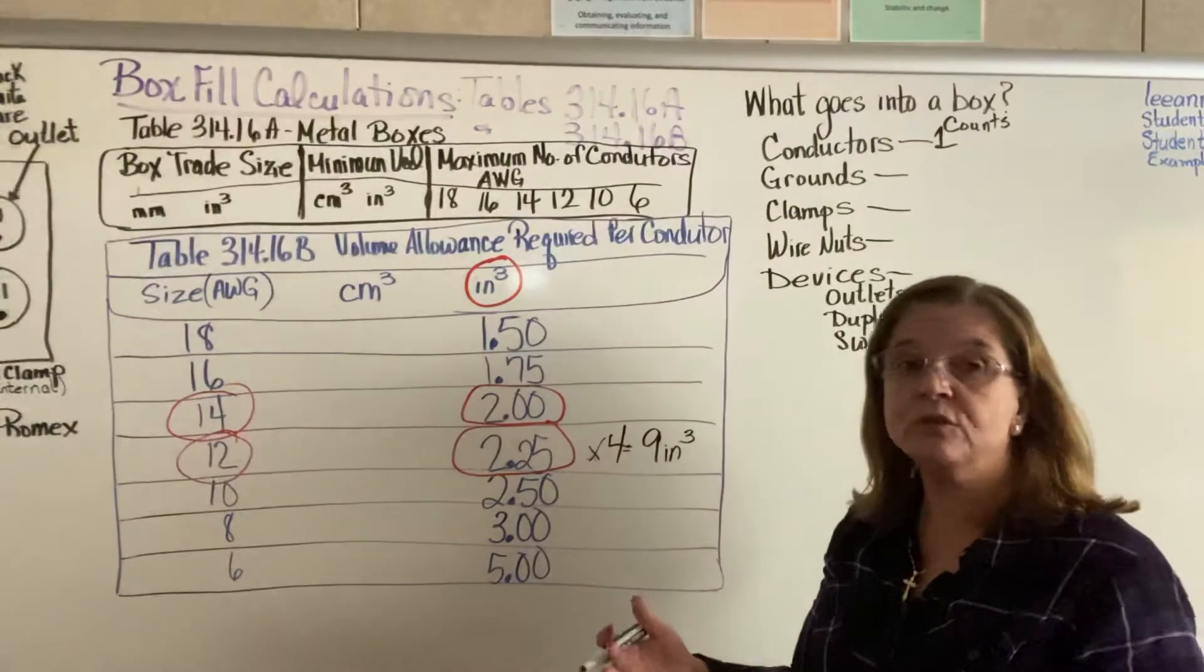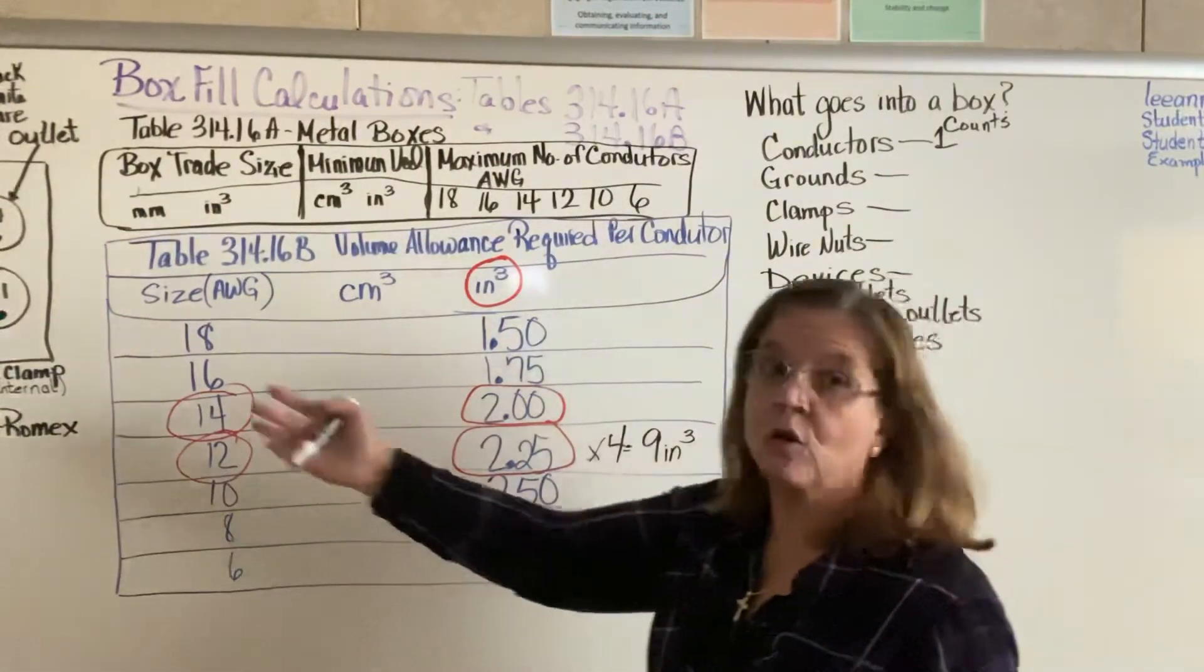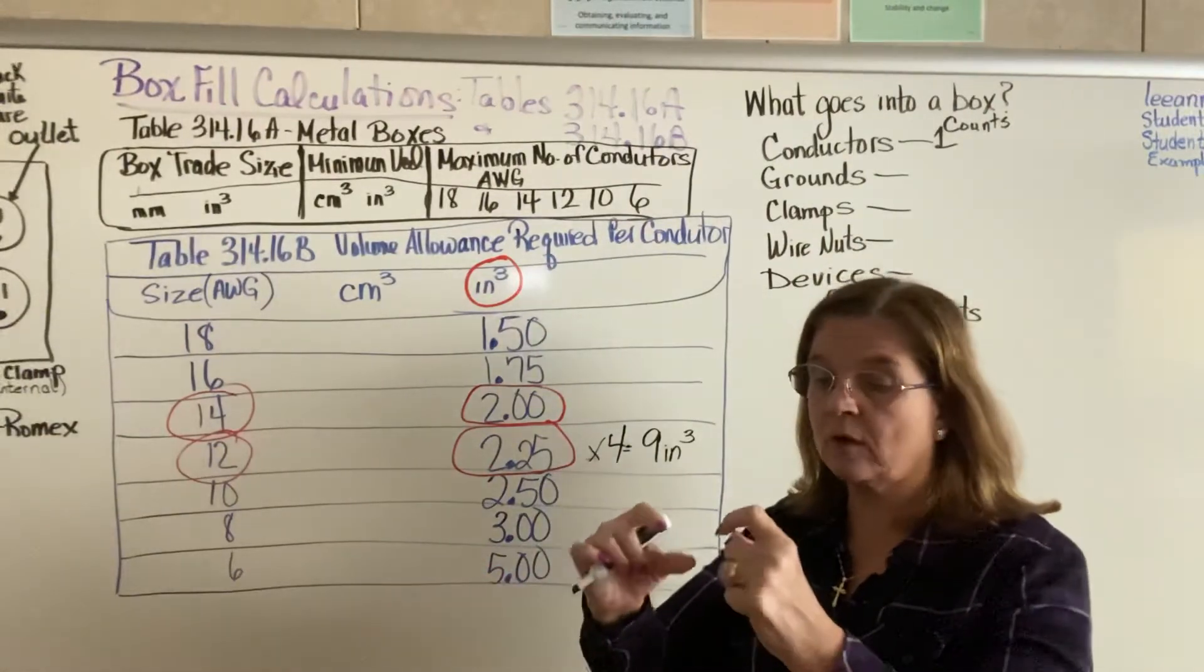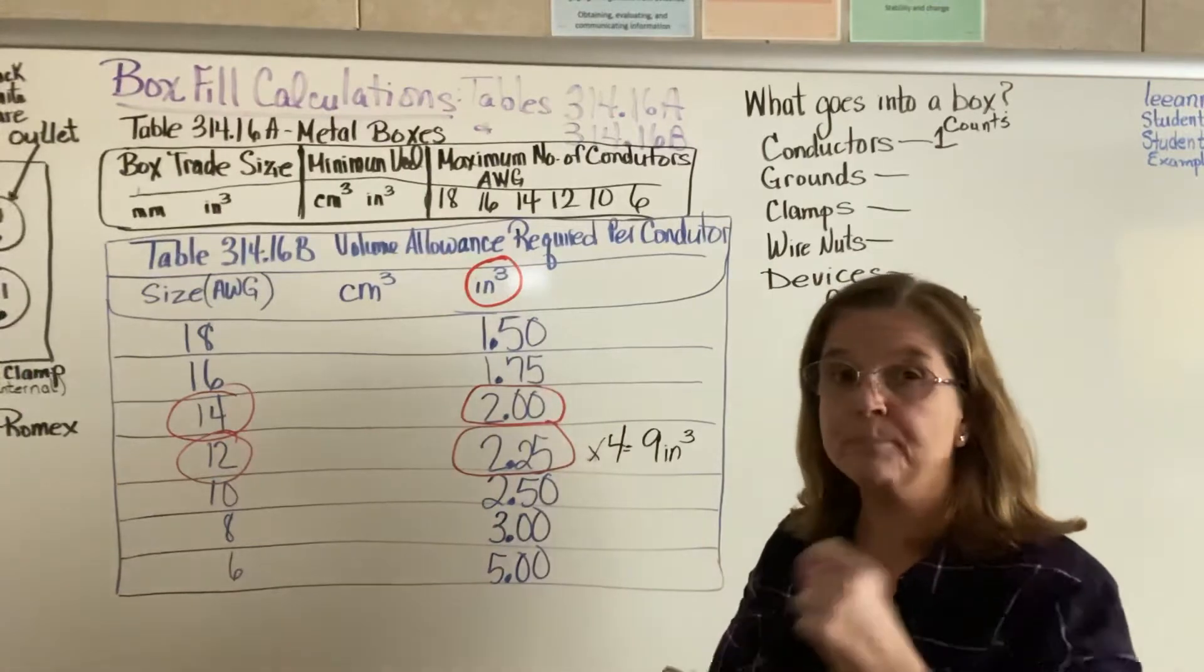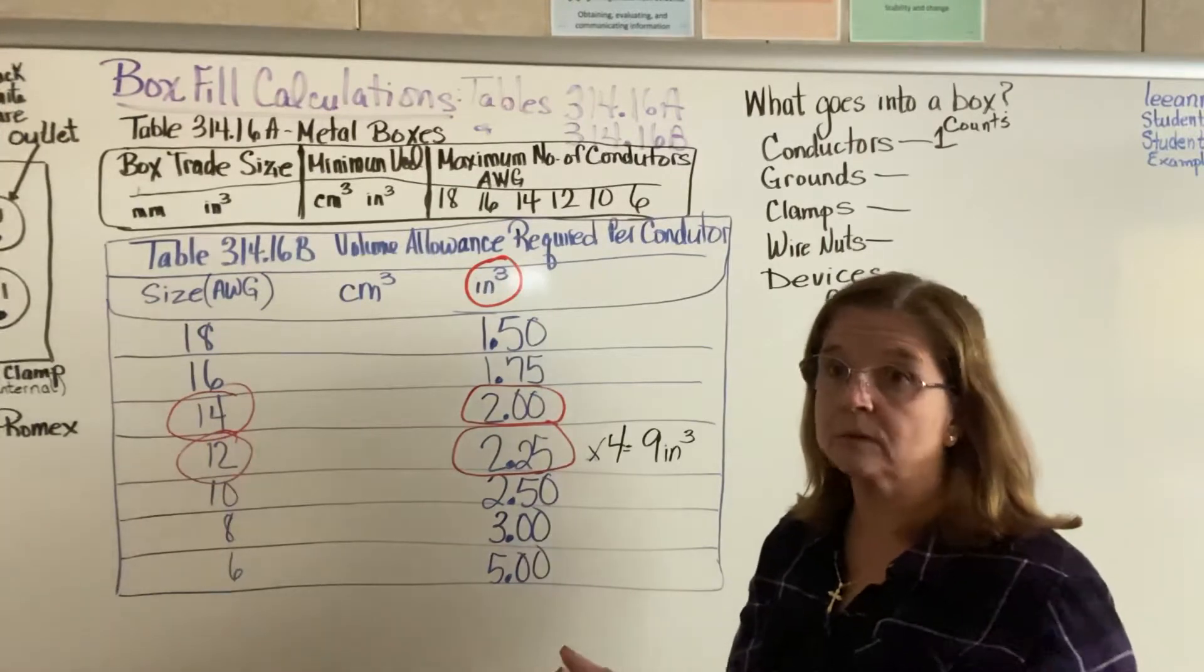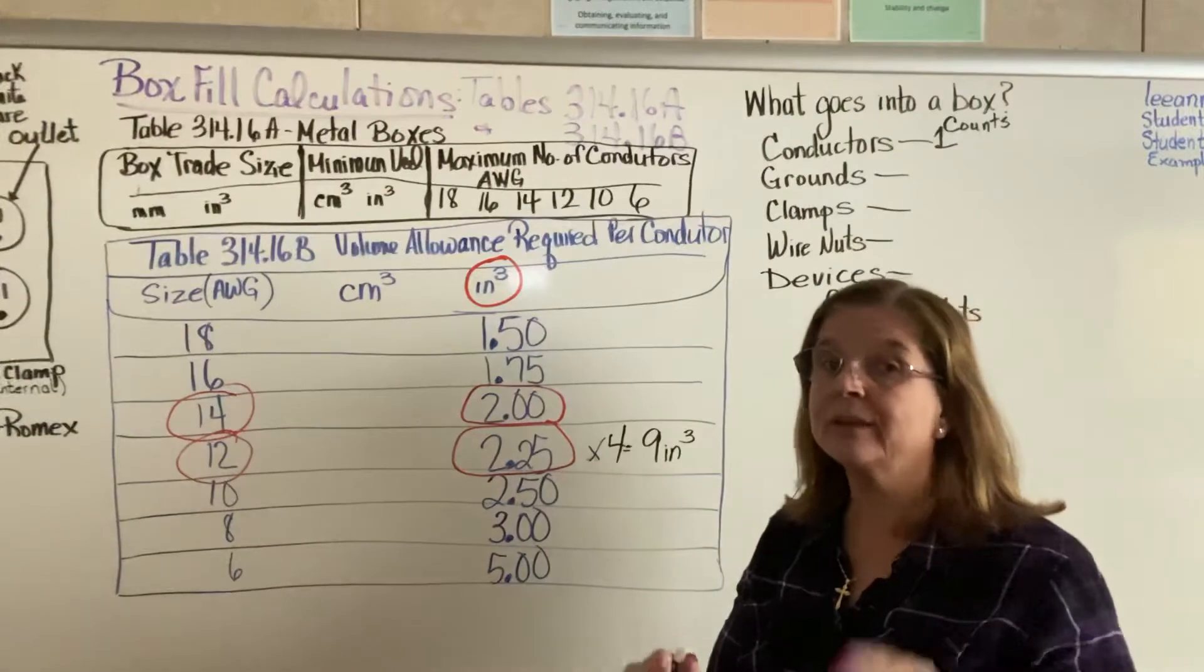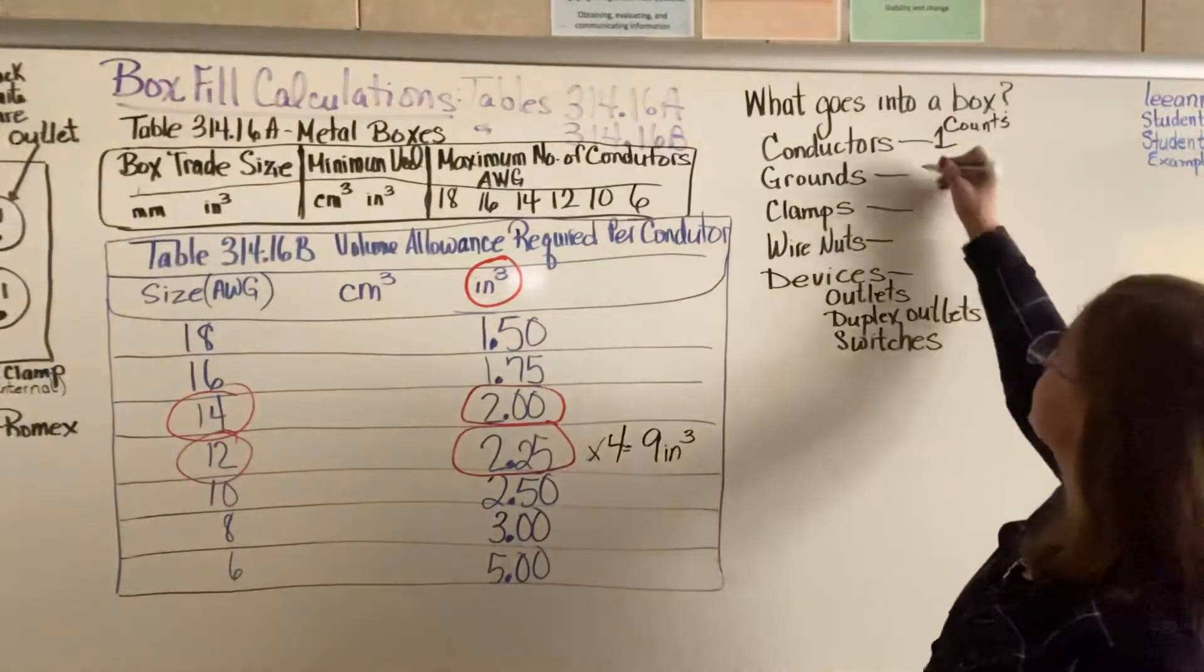You now have to use grounds. The grounds automatically come in the Romex. If you peel back a Romex, you will see there are three pieces of wire in there: a black, a white, and a bare wire. The bare colored wire, or the one with no covering, is the ground. No matter how many grounds you have in there, the grounds count only once. You pick the largest ground.